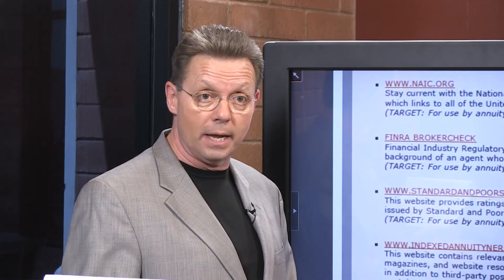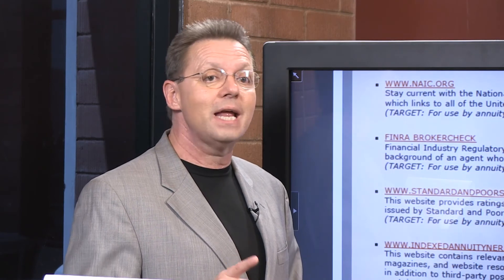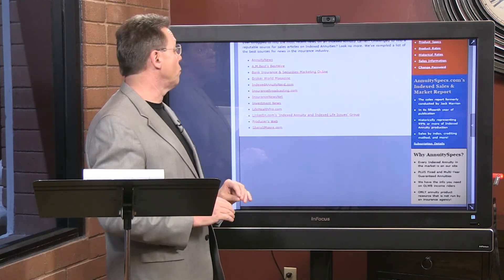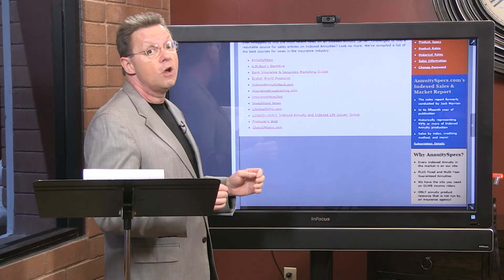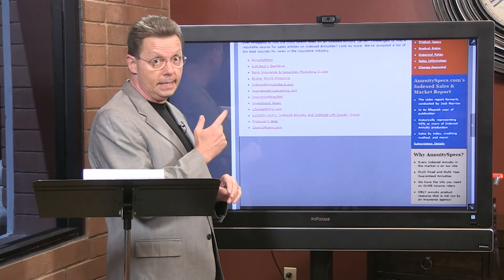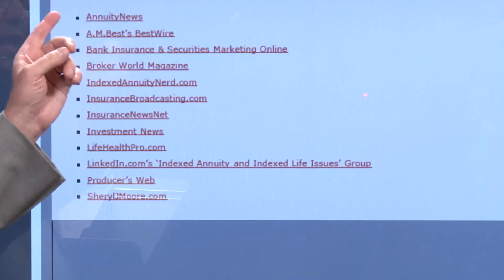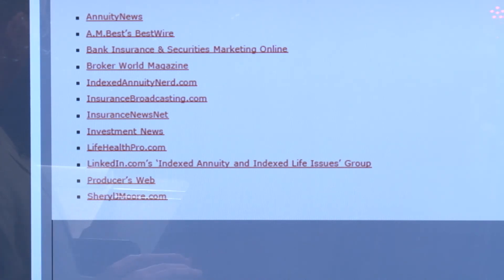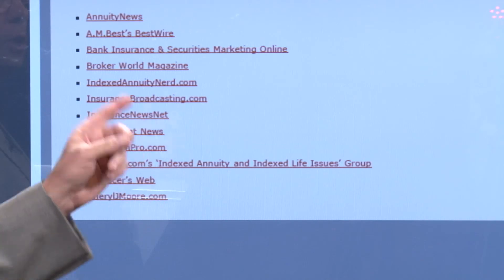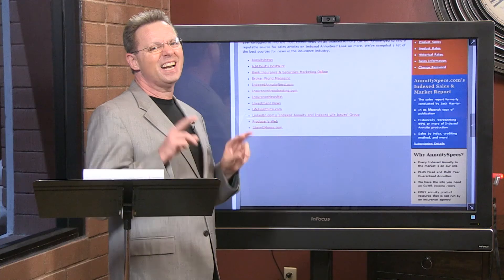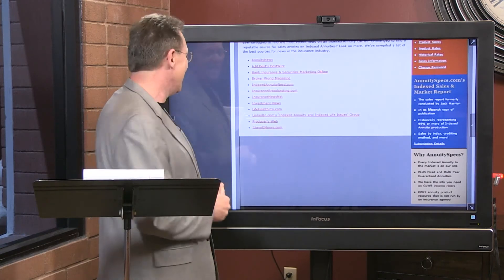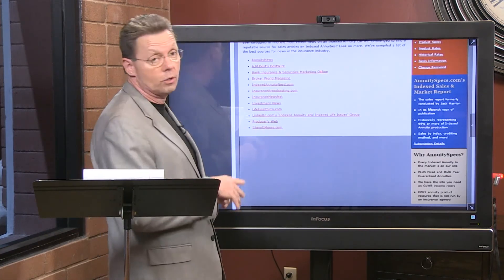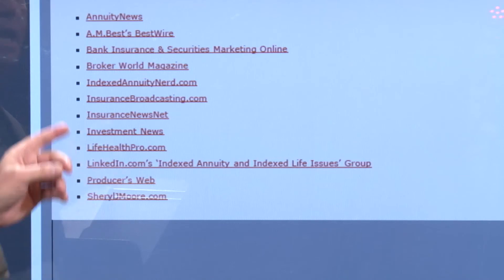The last thing I want to show you before closing is where to find up-to-date news on annuities. For reputable sources — especially on indexing — you can go to Annuity News, AM Best BestWire (hot off the press, watching our industry 24/7), Bank Insurance and Security Marketing online, and Broker World Magazine, which is really up-to-date for a trade publication.